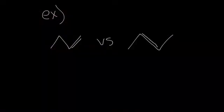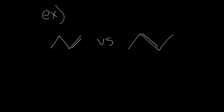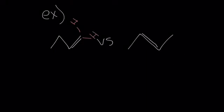We can now use our knowledge about substituted alkenes to determine which of these two structures will be lower energy or will be favored. Beginning with the structure on the left, we're going to draw in our hydrogens so that we can see how substituted this is. We have two hydrogens there and one here, and our fourth substituent is actually that carbon, so we can classify this as monosubstituted.